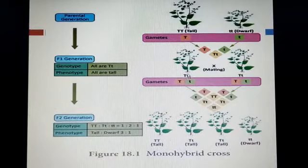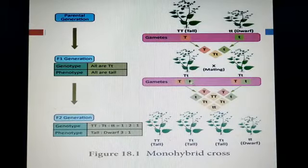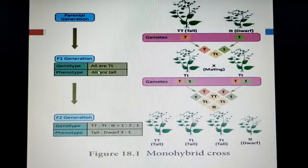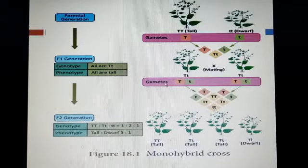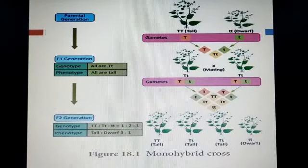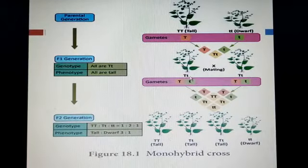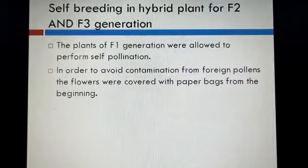The F1 generation is heterozygous because one allele represents tallness and the other represents dwarfness (recessive character). But the phenotype character that appears is the dominant one. Genotypically all are tall because capital T is present in all, so the dominant character appears — phenotypically all are tall. So in F1 generation all plants are tall but heterozygous, not homozygous.